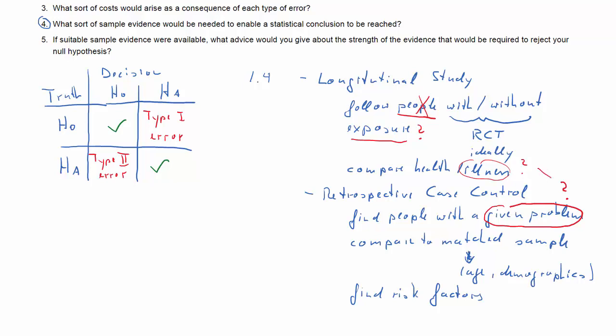That's the same problem with case control, because here you're looking for specific illnesses and the matching is a more specific problem. So the retrospective case control possibly isn't the way to go here.